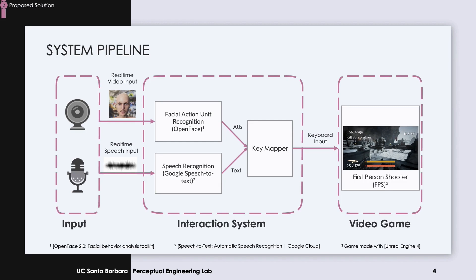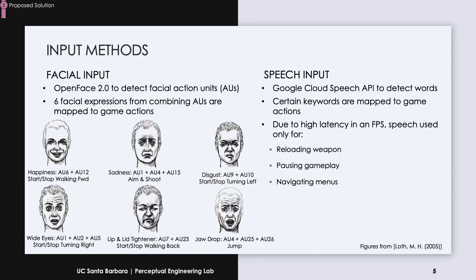To test our input system, we built a desktop FPS game in Unreal Engine. For the facial input, OpenFace detects AUs from the input video — AUs refer to facial muscle movements. We defined six facial expressions derived from AUs in our system, each of which is mapped to a certain action in the game.